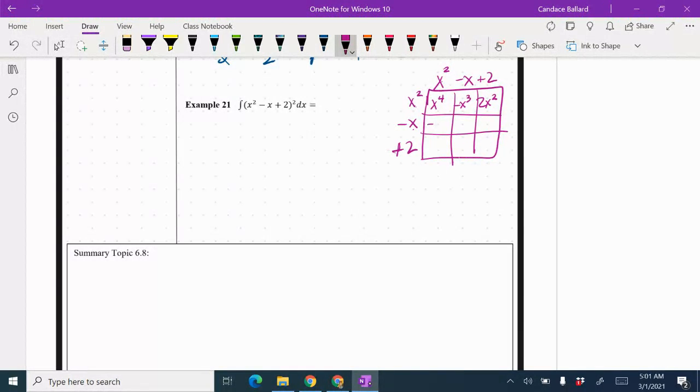Negative x times x squared would be negative x cubed. Negative x times negative x would be positive x squared. Negative x times 2 is negative 2x. 2 times x squared would be 2x squared. 2 times negative x would be negative 2x and 2 times 2 would be 4.